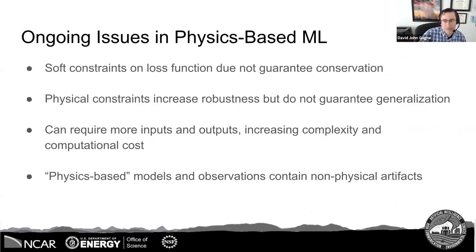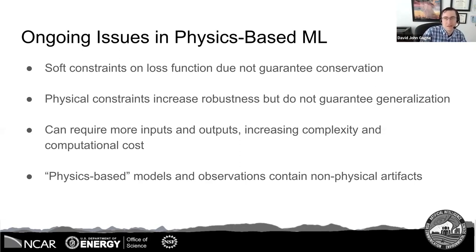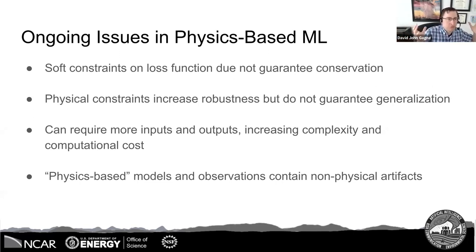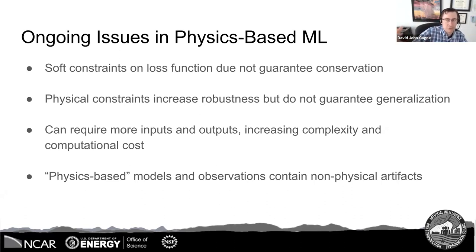There are a lot of ongoing issues with physics-based ML that still need to be addressed. Soft constraints on your loss function do not guarantee conservation — they reduce errors but because it's an iterative penalty, it's still not guaranteed. Also, while physics-based constraints increase robustness, they don't necessarily guarantee generalization outside your training data range — this is very problem-dependent. It can also require more inputs and outputs to the model: if you're conserving mass or energy, you may need to predict all outputs that go into the conservation equation.